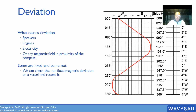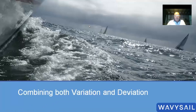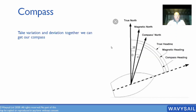If we combine both variation and deviation, we can work things out. True north is on our charts, then magnetic north, then compass north. So there are actually three different headings.